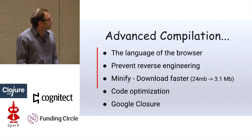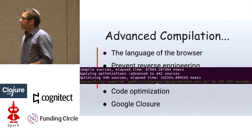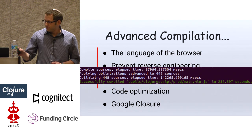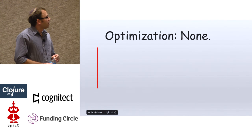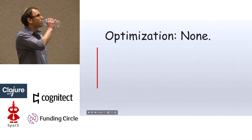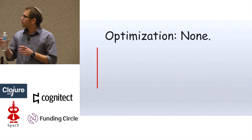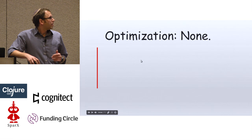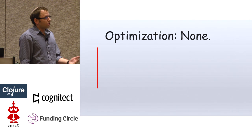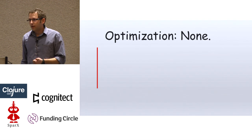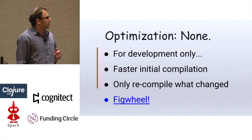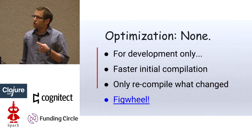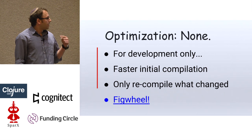The biggest problem: when compiling 32,000 lines of code it takes almost four minutes — a long time. The first solution is 'optimization none.' When using Leiningen or cljs-build to compile ClojureScript code, we can tell it not to do any optimization. This loses all the benefits we spoke about — our code won't be minified — which is why it's used for development only. But the initial compilation takes less than two minutes, and every change we make in a file will only cause that file to be recompiled.